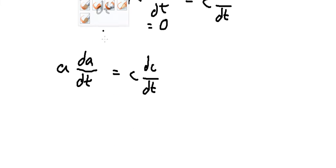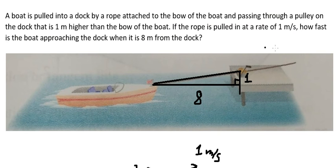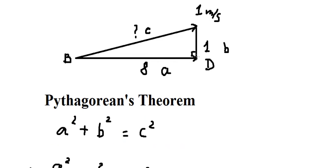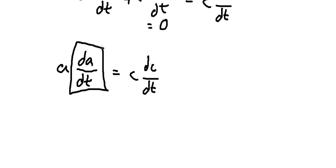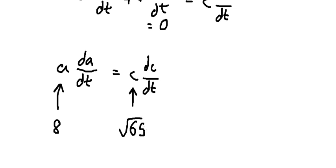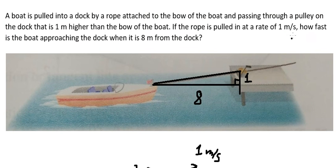So we know that they want to find the velocity of the boat approaching the dock, that is about this one, da/dt. We know that a is about number 8, c is about the square root of 65, dc/dt is about number 1 from the question. So we just find da/dt.